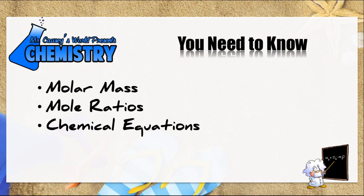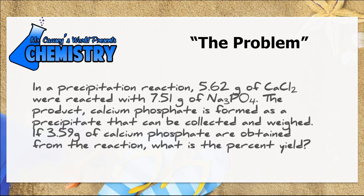So here's the problem: In a precipitation reaction, 5.62 grams of calcium chloride